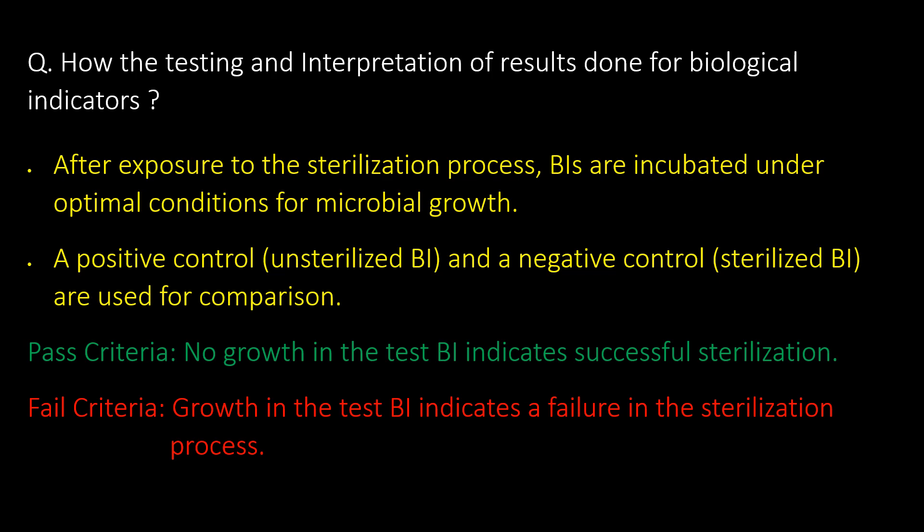Very important question: how is the testing and interpretation of results done for biological indicators? After exposure to the sterilization process, biological indicators are incubated under optimal conditions for microbial growth. A positive control (unsterilized biological indicator) and a negative control (sterilized biological indicator) are used for comparison. Pass criteria: no growth in the test biological indicator indicates successful sterilization. Fail criteria: growth in the test biological indicator indicates a failure in the sterilization process.